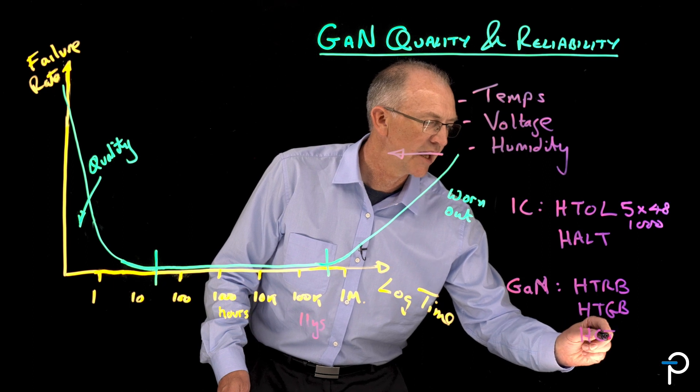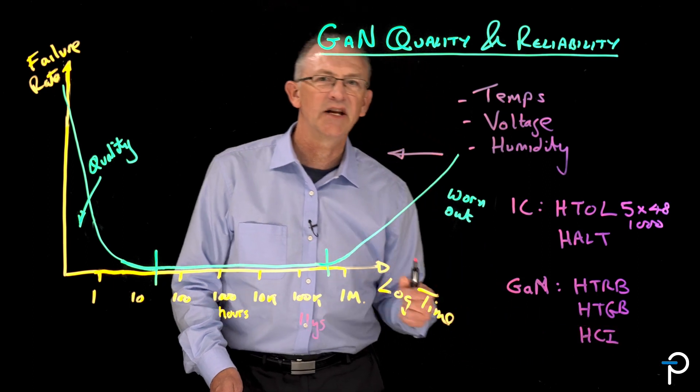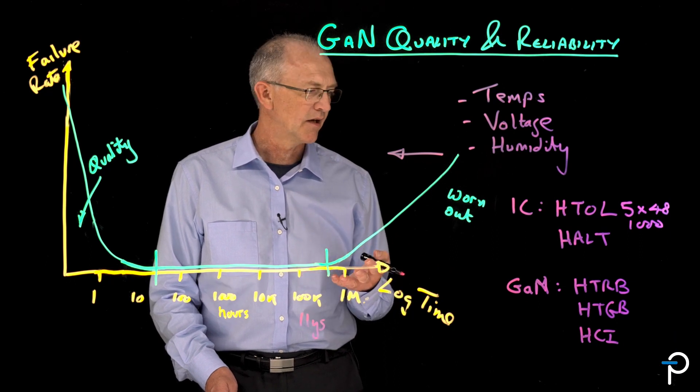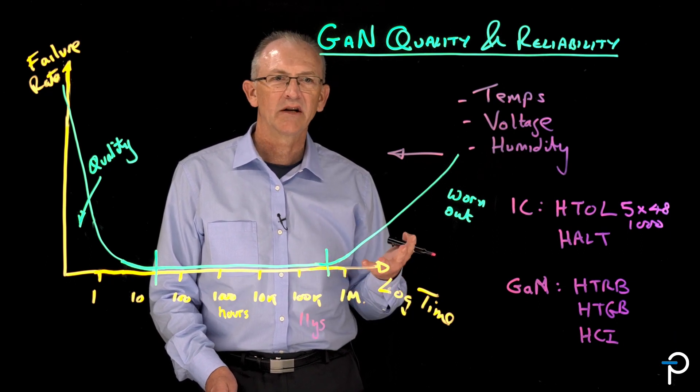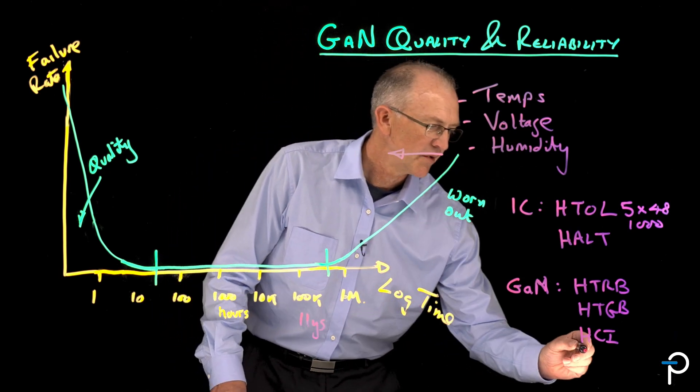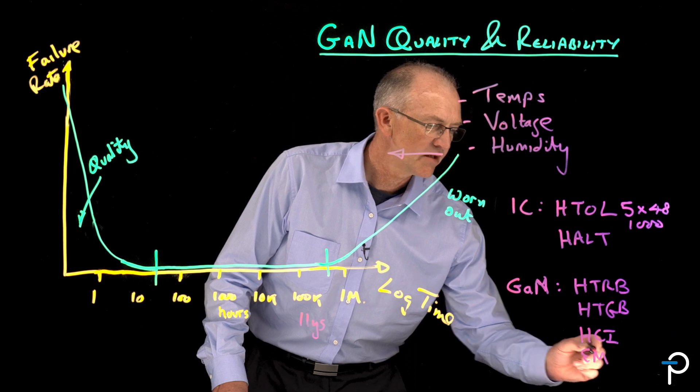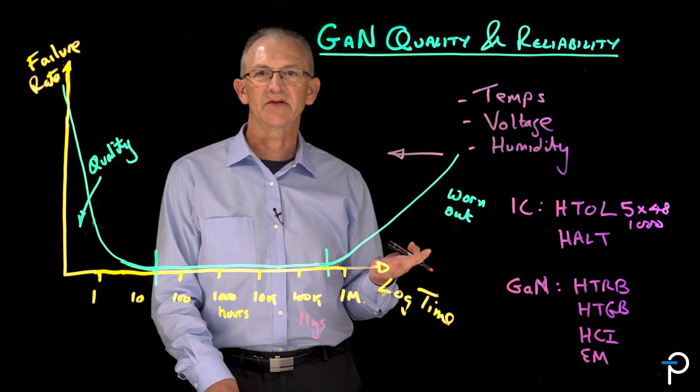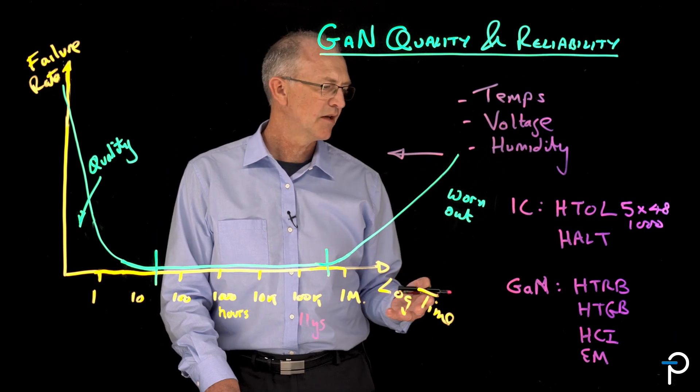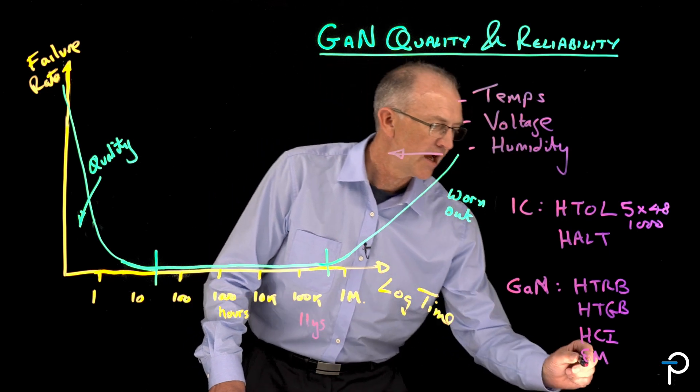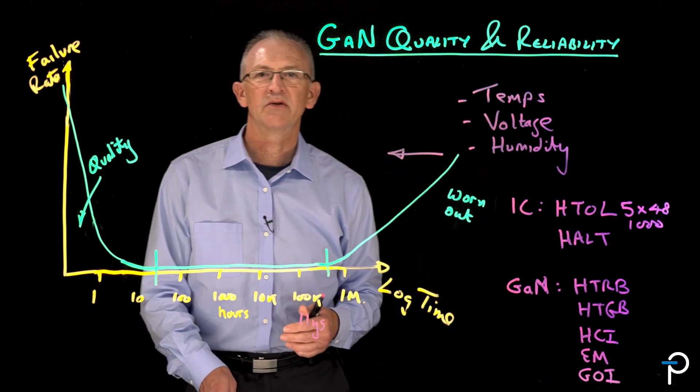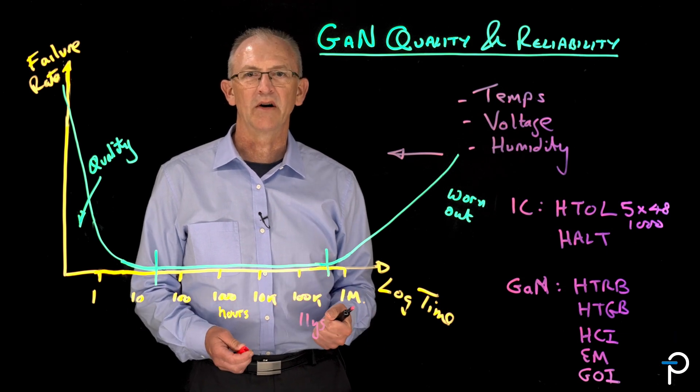We also do something called hot carrier test, and that's intended to find any traps where electrons in the channel can get diverted into oxides and become trapped. We do an electro-migration test to make sure that our conductors, all the metal that's on top of the die, are appropriately sized and won't be pushed around by current flows. And we do a gate oxide integrity test to improve the strength of our gate.